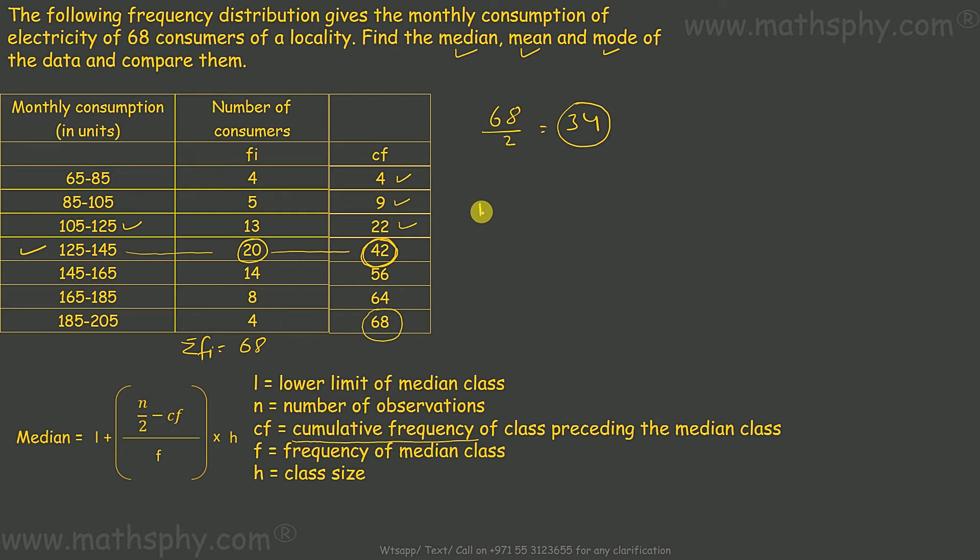So I will write here, median class would be 125 to 145. Lower limit of the median class, L is 125. Number of observations N is 68. Cumulative frequency of class preceding the median class: before this median class, we have this range 105 to 125, and cumulative frequency for this is 22.